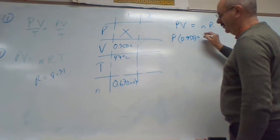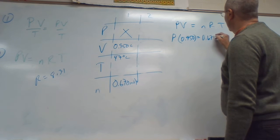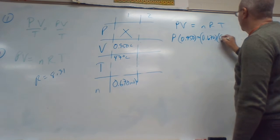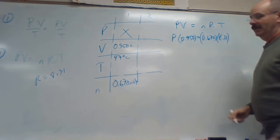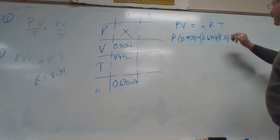N is down here. So, that's 0.670. R was, remember, 8.31. That doesn't change. As long as we keep with kilopascals.